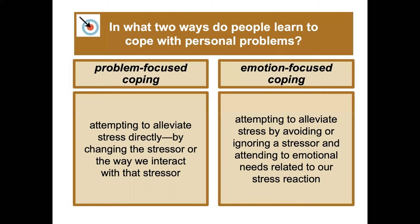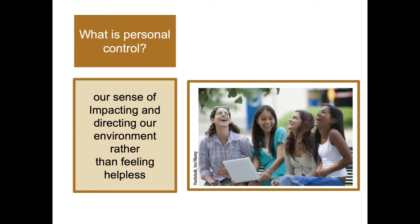There are two ways people learn to cope with personal problems. Problem-focused coping is attempting to alleviate stress directly by changing the stressor or the way we interact with it. Emotion-focused coping is attempting to alleviate stress by avoiding or ignoring a stressor and attending to the emotional needs related to our stress reaction. Personal control refers to our sense of impacting and directing our environment rather than feeling helpless — our sense of self-direction.